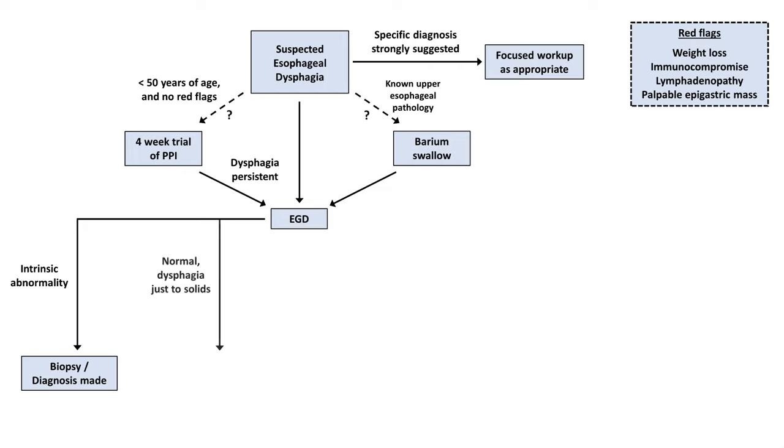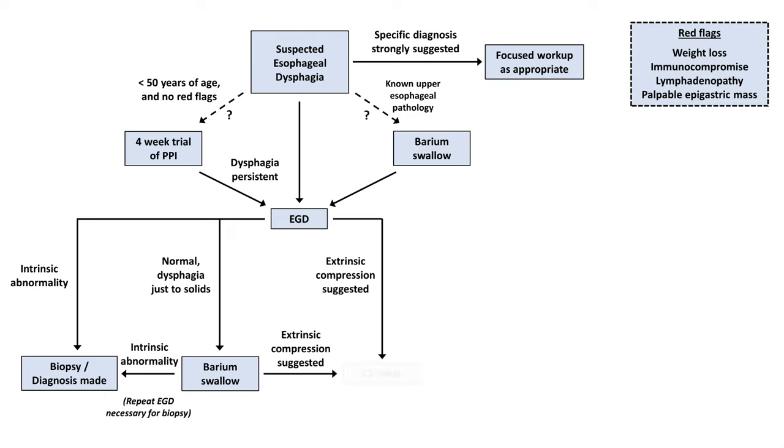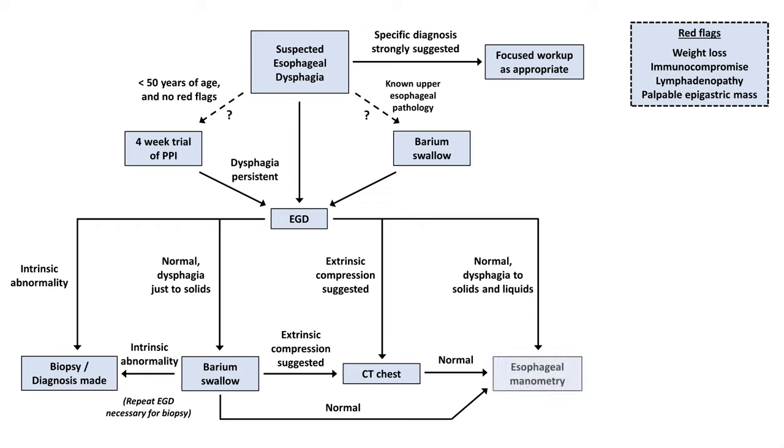On the other hand, if either the EGD or barium swallow suggests extrinsic compression, it should be followed by a CT of the chest to look for a mediastinal mass and vascular abnormalities. And if the barium swallow or CT chest are done and are normal, or if the EGD was normal in a patient with dysphagia to solids and liquids, this is all suggesting a motility disorder, which usually requires esophageal manometry for diagnosis.